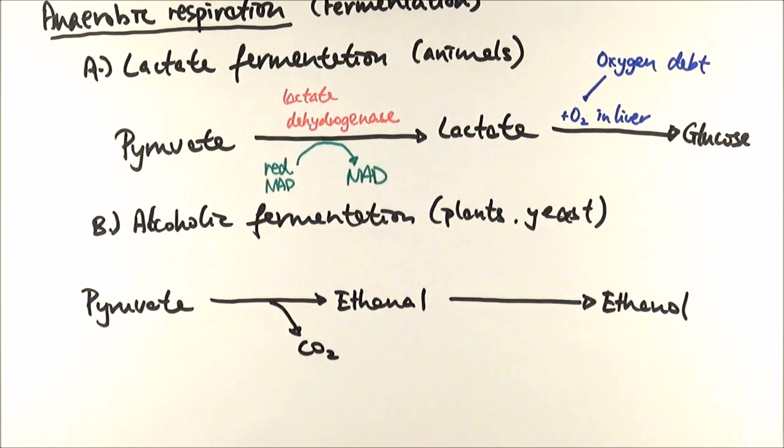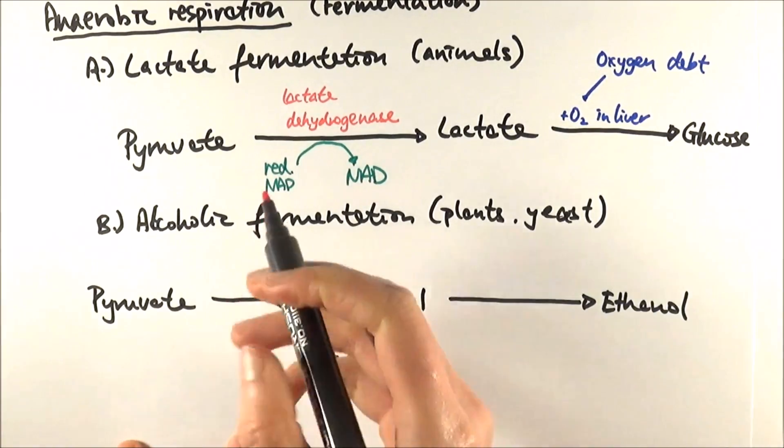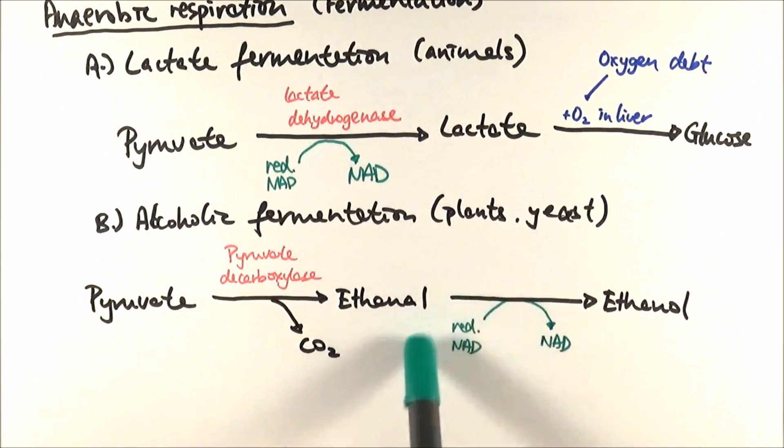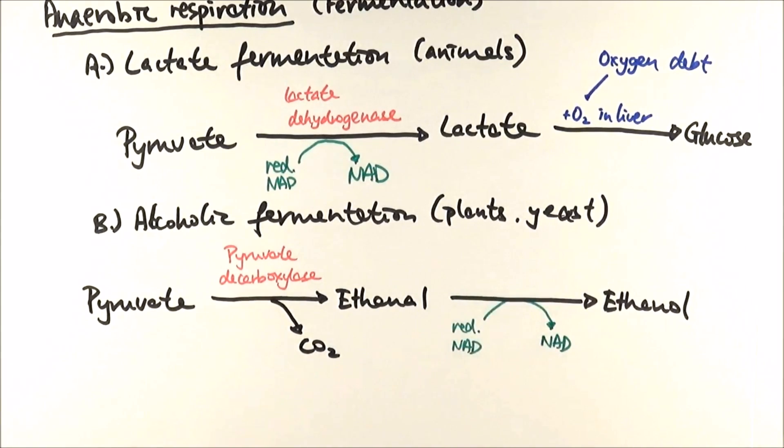And because we're losing a carbon dioxide, this is a decarboxylation reaction, and we say that the enzyme to catalyze this reaction is called pyruvate decarboxylase. So from ethanal to ethanol, it needs to gain a hydrogen atom. So reduced NAD comes along to give it that to make ethanol, which is our final product.